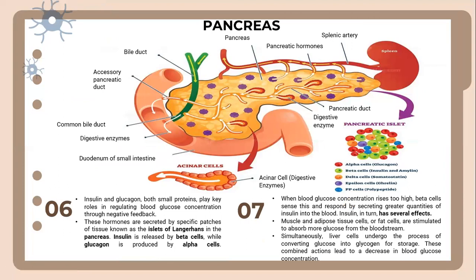Let's look into the pancreas. Insulin and glucagon, both small proteins, play key roles in regulating blood glucose concentration through negative feedback. These hormones are secreted by specific patches of tissue known as islets of Langerhans in the pancreas. Insulin is released by beta cells, while glucagon is produced by the alpha cells.